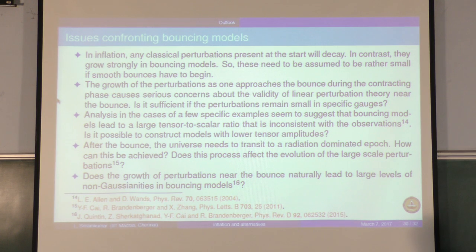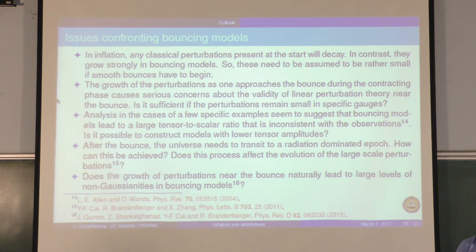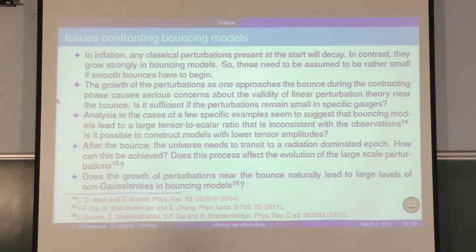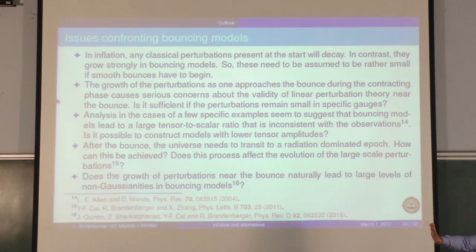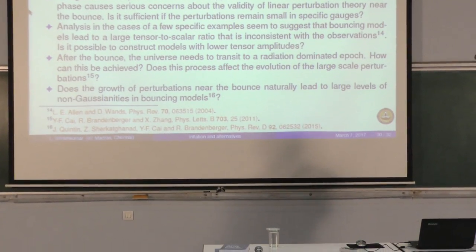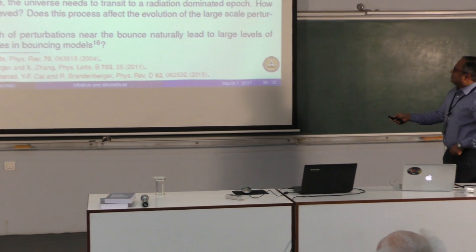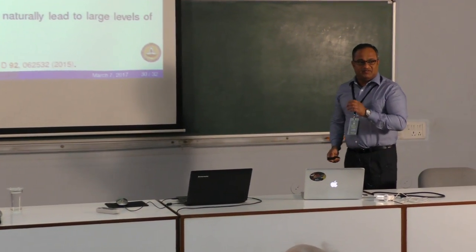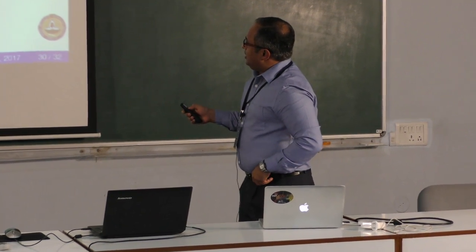The second problem: we have been studying scalars as well. The scalar perturbations too rapidly grow as one approaches the bounce. In fact, it's easy to show that the curvature perturbations will diverge exactly where the weak energy condition is violated. What we can do is go to some other gauges, circumvent this problem, evolve them through the bounce, and evaluate the power spectra after the bounce. But this is an issue — is it sufficient if the perturbations remain small in specific gauges?